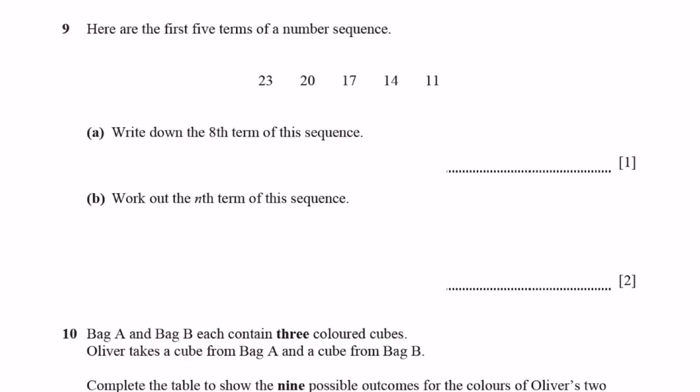Question 9. Here are the first five terms of a number sequence. Part a. Write down the eighth term. We can see that we subtract 3 each time. This is the fifth term. We subtract 3 once to get 8 as a sixth term. Then subtract 3 again to get 5 as a seventh term. And the eighth term will be 2. So 2 is the answer.